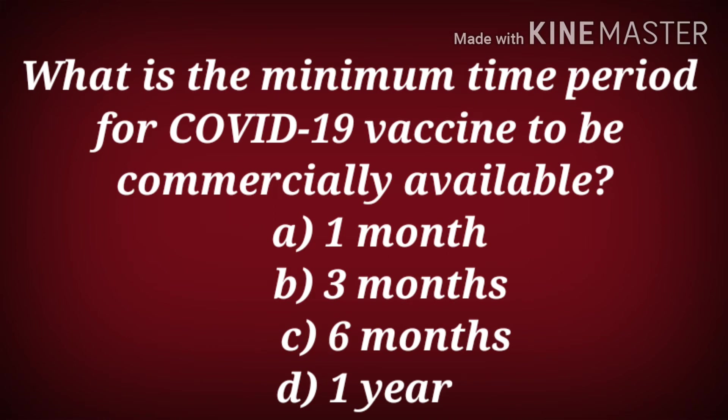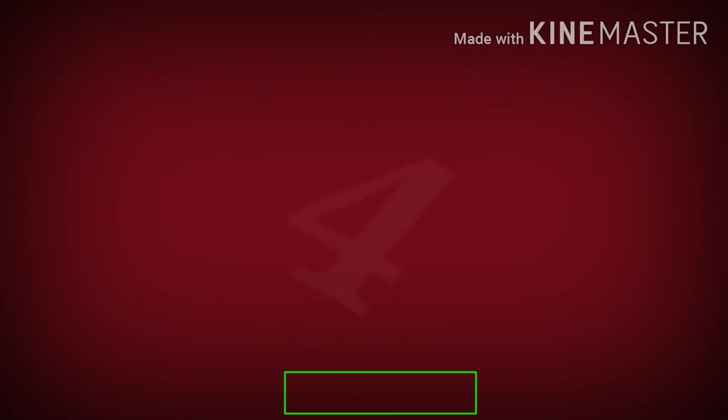What is the minimum time period for a COVID-19 vaccine to be commercially available? Is it one month, three months, six months, or one year? The correct answer is one year.